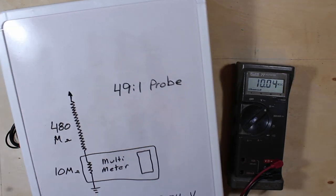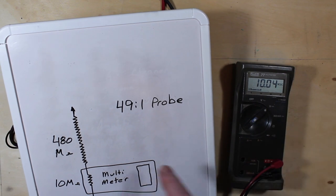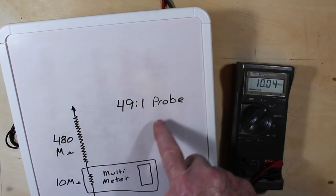And here's what we're going to be looking at. This is 480 mega ohms, this is 10, so we're going to end up with a 49 to 1 situation here. 480 across the 10 gives us 49 to 1.